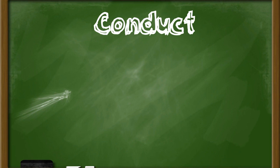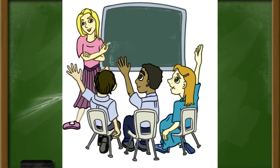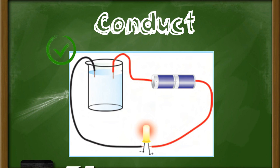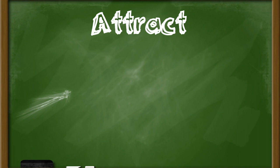Another word we'll come across when classifying matter is conduct. You may have heard conduct used in the classroom — conducting yourself well means behaving appropriately. But in science, conduct refers to electricity flowing. To conduct electricity means the electricity is able to flow in a circuit. We will explore different items and see which ones conduct electricity, which takes time, patience, and good scientific practice.